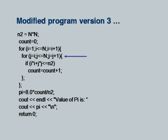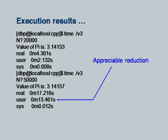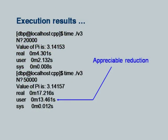It does not matter whether N squared has been removed by the compiler or by me — I do both things. Since I am now calculating only half the area, instead of multiplying by 4 I multiply by 8. The estimation technique remains the same and I print the value of pi. Executing this version with n equal to 50,000, I am now examining 50,000×50,000 divided by 2 points. The user time is 13.461 seconds, whereas earlier it was in the range of 26–27 seconds. It has indeed reduced by half — there is an appreciable reduction.